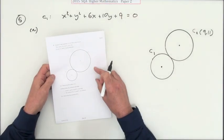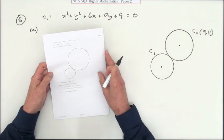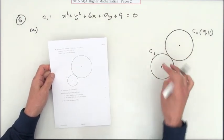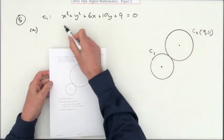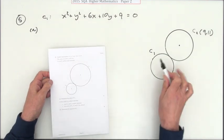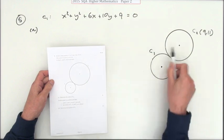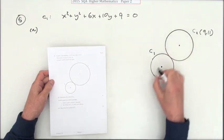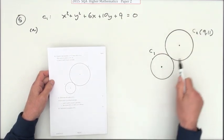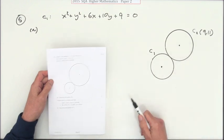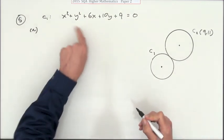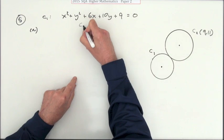Number five from paper two of the 2015 Higher Maths exam is a circles question. There are two circles drawn. It gives the equation of one of them, C1, that's the smaller one, but it gives the center of the larger one. It says if these two circles touch externally, so they're outside of each other, what's the radius of the big one, C2, for four marks?